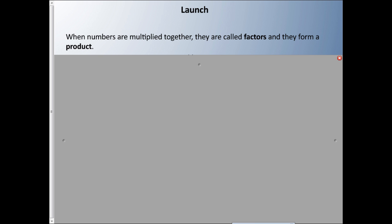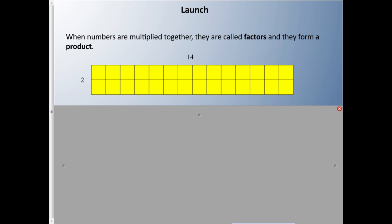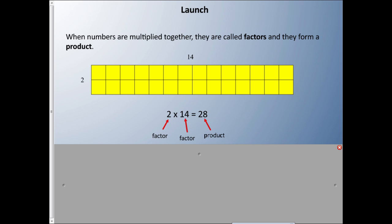Welcome back to lesson four. Today we're going to talk about something called factors. When numbers are multiplied together, we call these numbers factors, and they form something called a product — the product is the answer. I like to think of a factory: outside of a factory comes a product, and that's the end result.